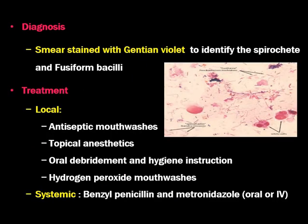How to diagnose? The diagnosis is by smear stained with Gentian Violet. We need to identify the spirochete as well as fusiform bacilli. In this picture you can see the spirochete and the fusiform bacilli — so this is 100% diagnostic for Vincent's Angina. The tissue or smear has to be taken from the oropharynx or from the oral cavity from the ulcers or necrotic tissues.